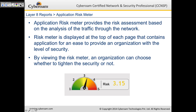The application risk meter provides a risk assessment based on traffic analysis. It is displayed at the top of each page and uses color coding: green (1-2) means low risk, yellow (3) is medium, and orange/red (4-5) indicates very high risk from applications in use. By viewing the risk meter, an organization can decide whether to tighten security and block high-risk applications to reduce overall organizational risk.